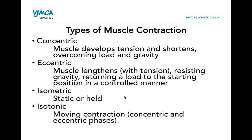An isometric contraction is a static or held contraction — like if you were doing a bicep curl and you held the position, that's an isometric contraction. An isotonic contraction is a moving contraction involving both concentric and eccentric phases — like bench press or bicep curls using resistance bands or chains. The chains add load during both the concentric and eccentric phases, making it an isotonic contraction.